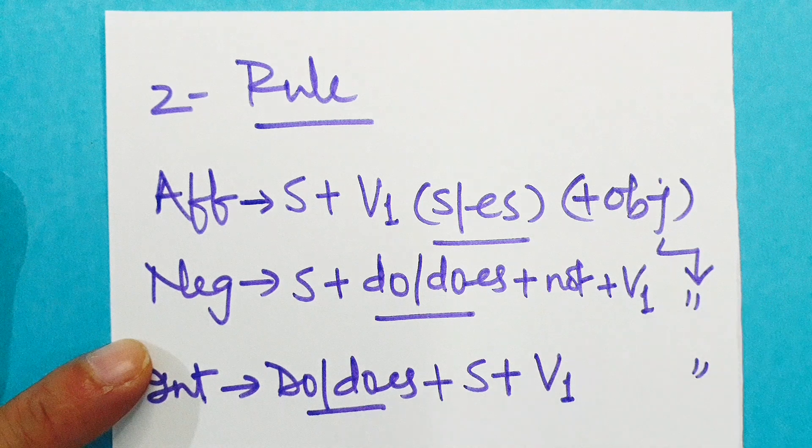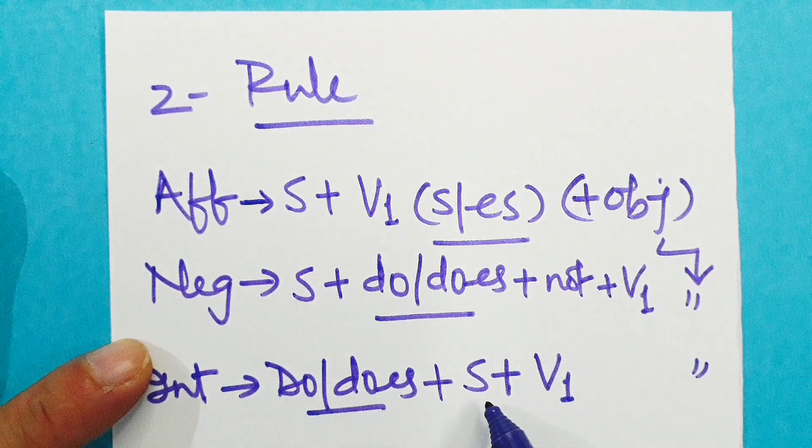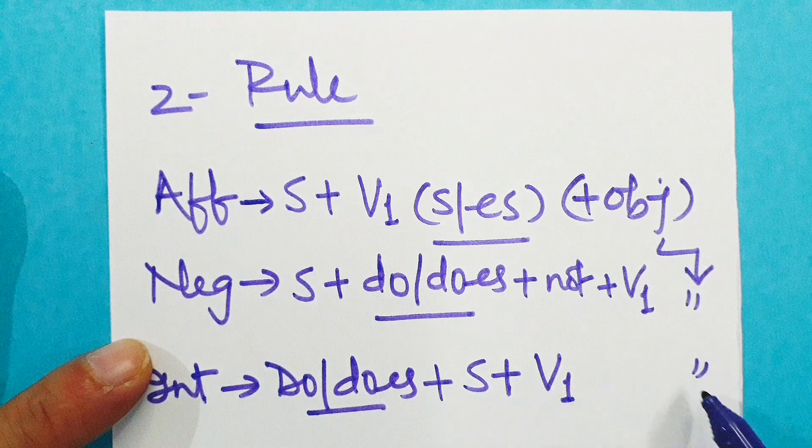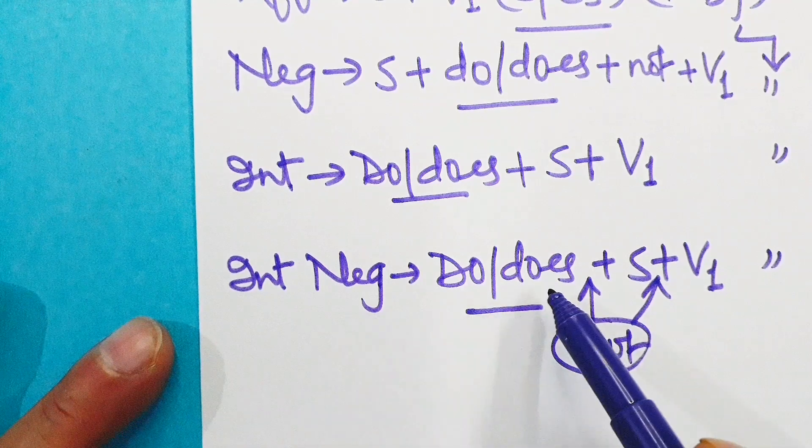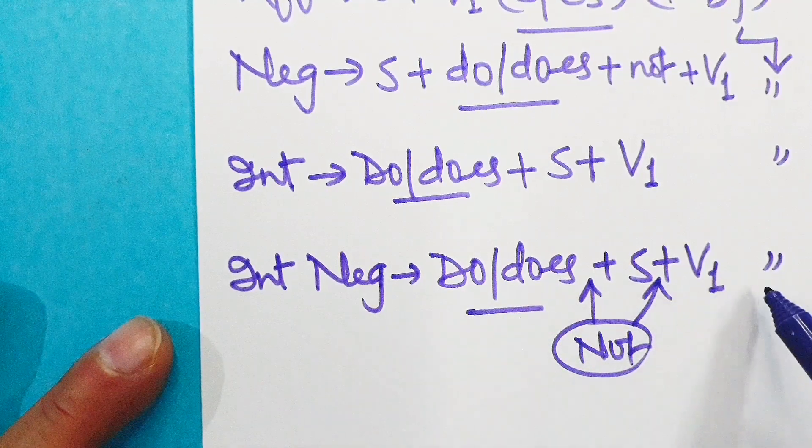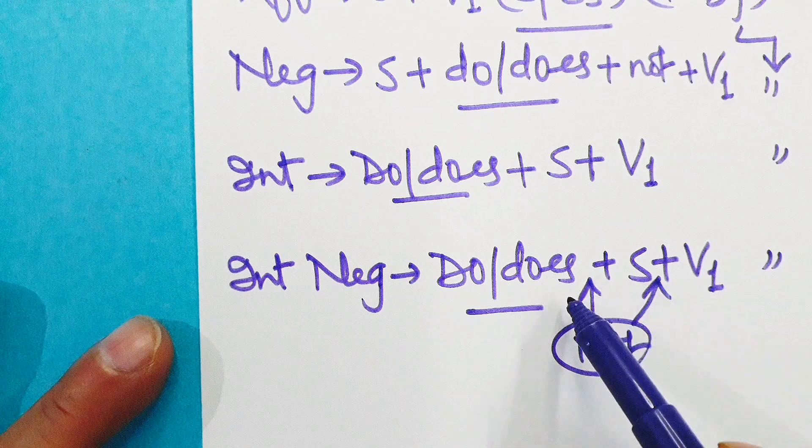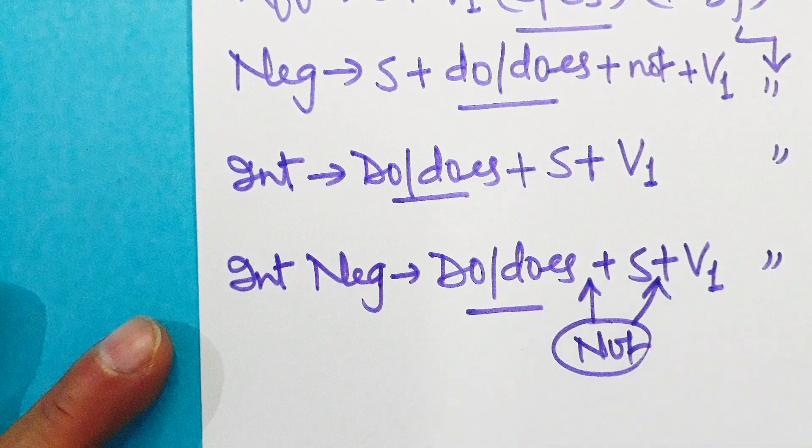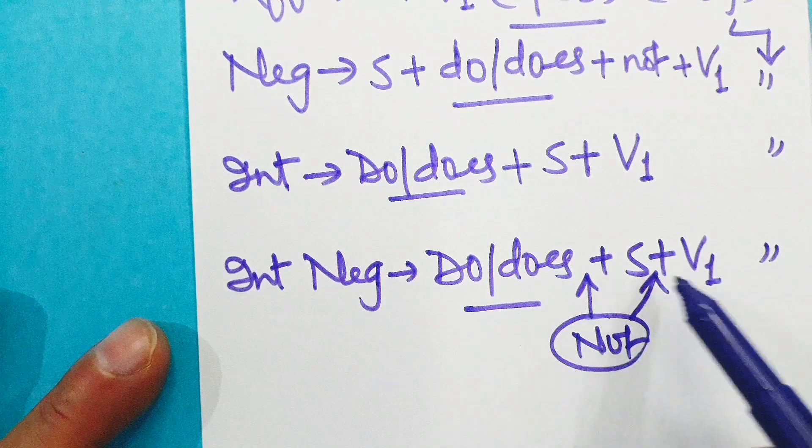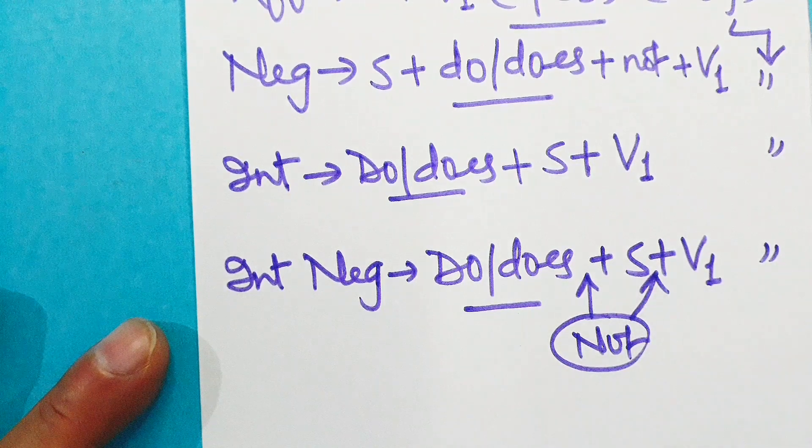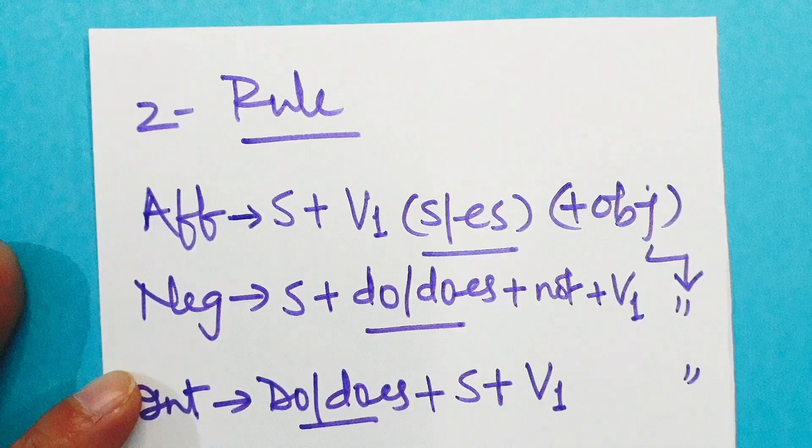Interrogative: do or does plus subject plus V1 plus object if any. Does he write a letter? Now interrogative-negative: do or does plus subject plus V1 plus object. As regards not, not can be used before subject or after it, like doesn't he write a letter, or does he not write a letter? But the smarter approach is doesn't he write a letter.